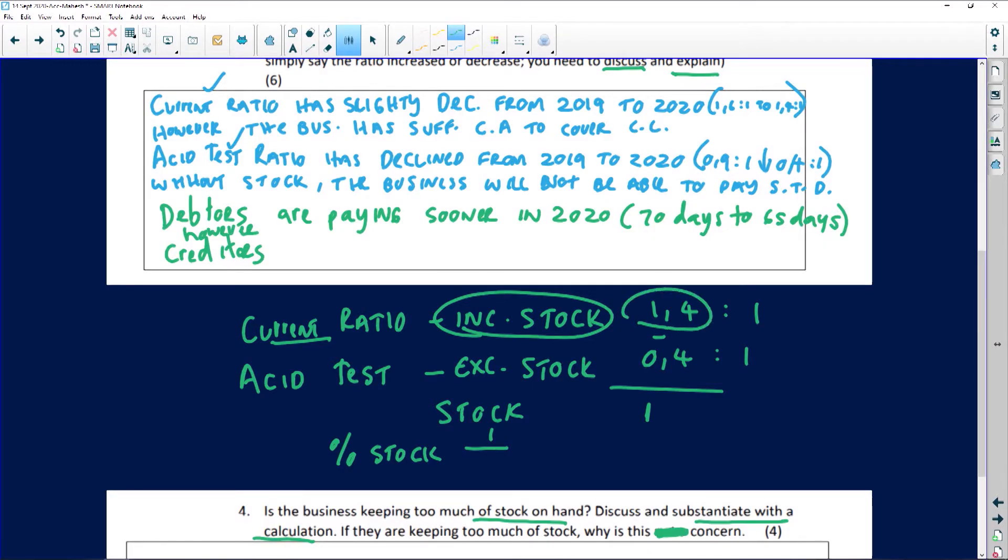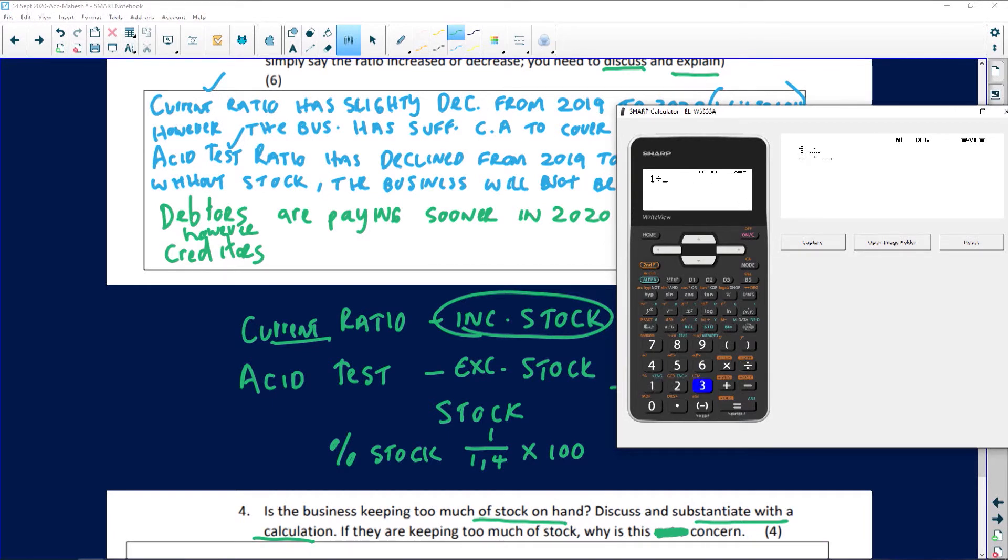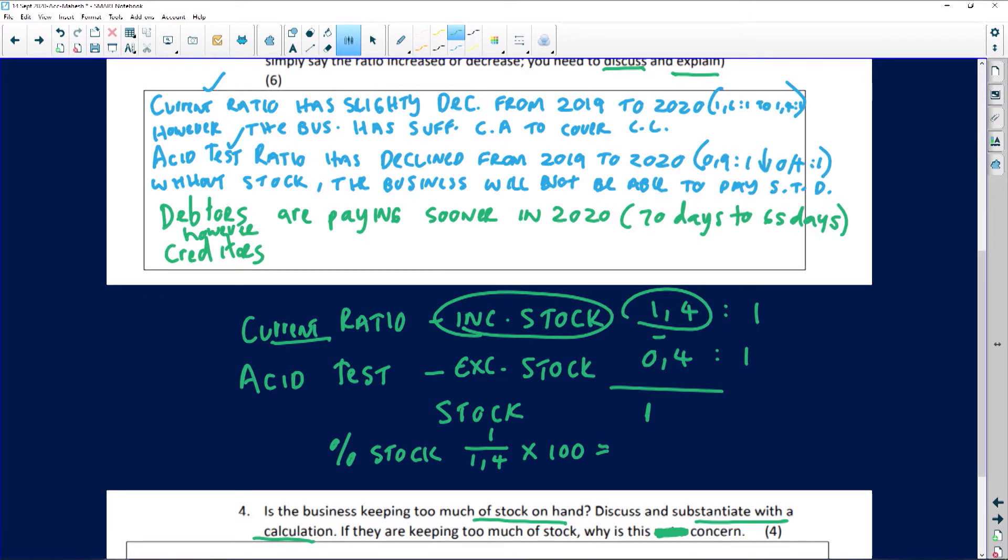So remember I'm calculating what percentage of stock makes up current assets. So current assets, current ratio is 1.4. So 1 divided by 1.4 times 100, let's get the calculator out. So what percentage of current assets is made up of stock? So 1 divided by 1.4, okay let's just change that, times 100, and we can obviously see it's 71 percent. Okay, we can change that further, so 71.42 percent, let's just round that to 71.